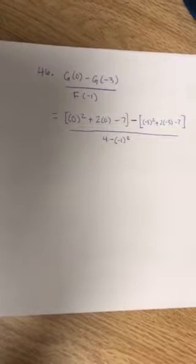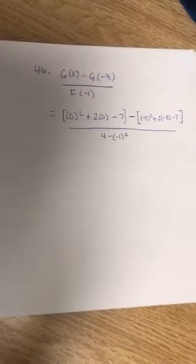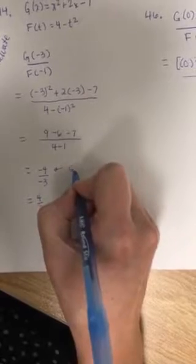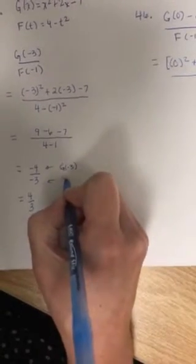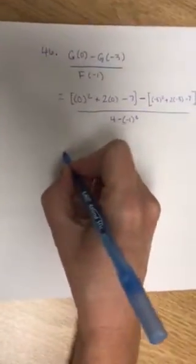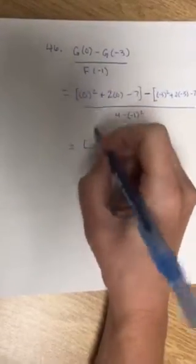Now in number 44, we evaluated f of negative 1, and we evaluated g of negative 3. So the numerator for number 44 right here, this is g of negative 3, and negative 3 is f of negative 1. So what I could do is go back over to 46 and work on g of 0, because I don't have that part yet.